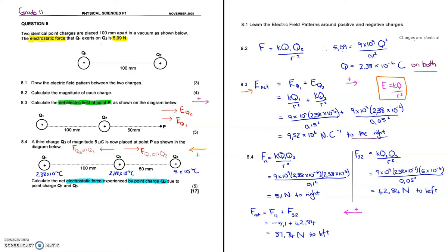I work out the two separate forces using Coulomb's law from the data sheet. The force of Q1 on Q2 uses charges Q1 and Q2, with distance 0.1 metres between them - we calculated these charges in 8.2. This force is to the right and equals 5.1 newtons when calculated, though you don't need to work it out since it was given as 5.09 newtons. The small difference is due to rounding in 8.2, so you can simply use 5.09 newtons directly.